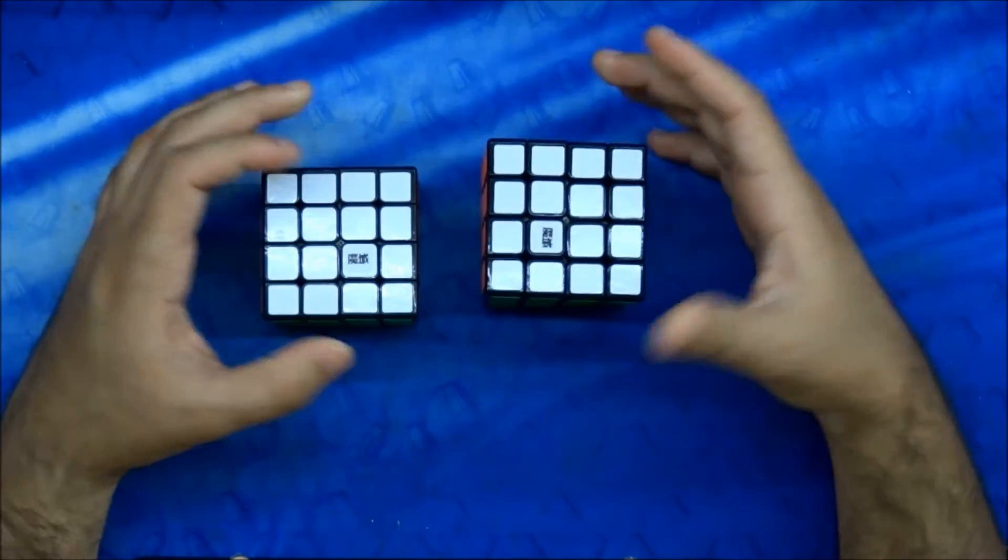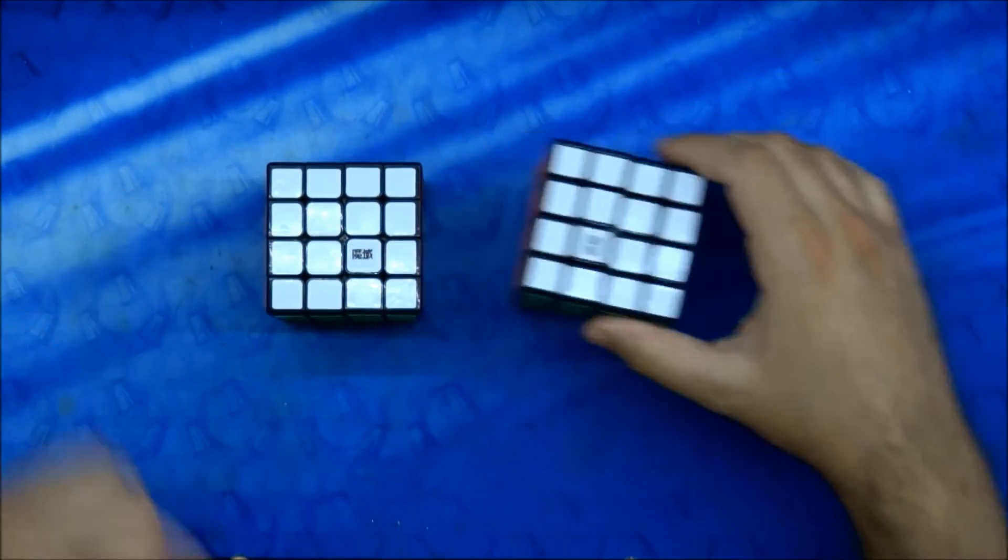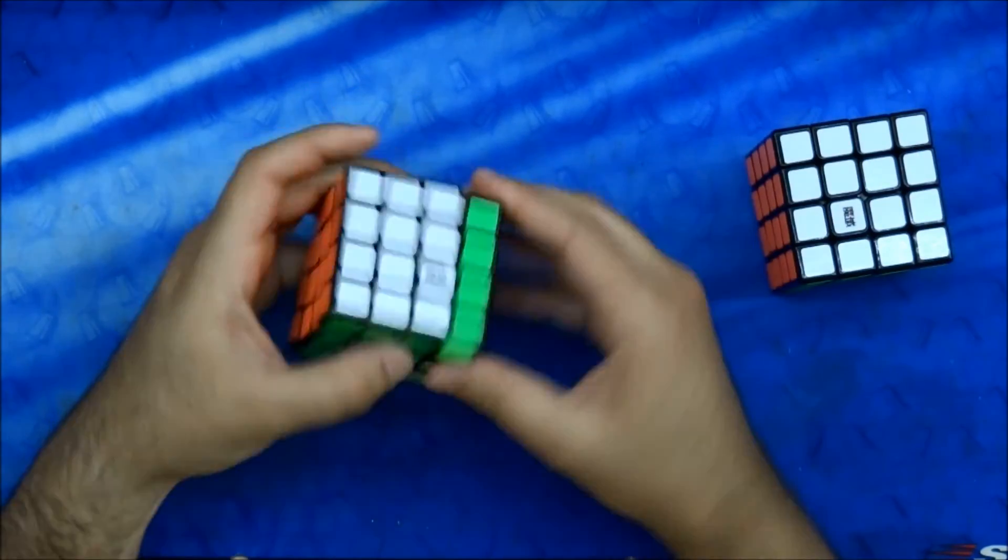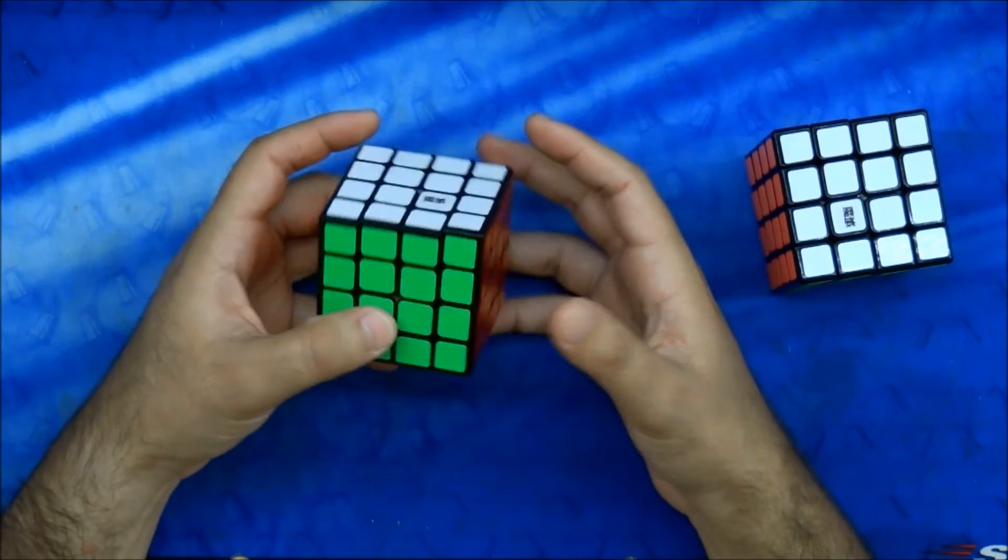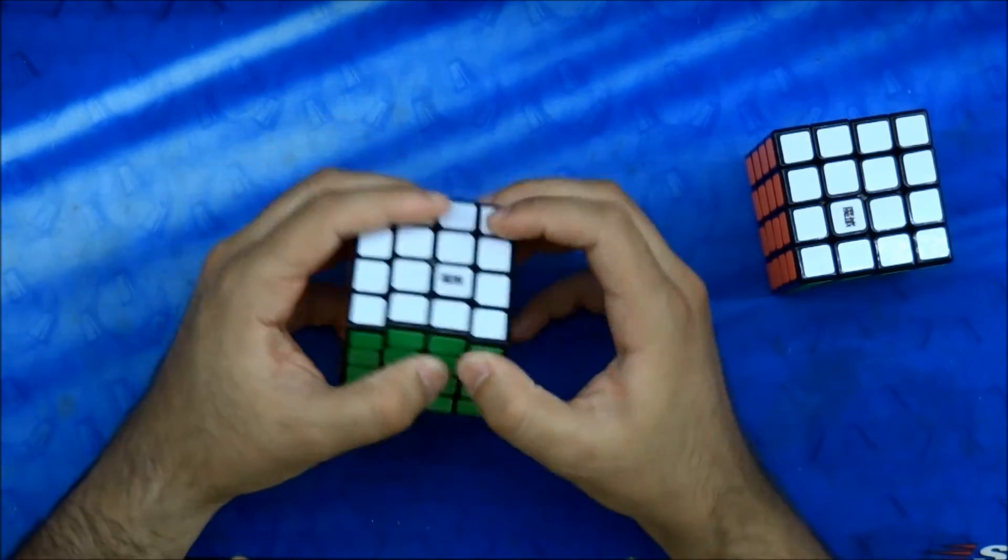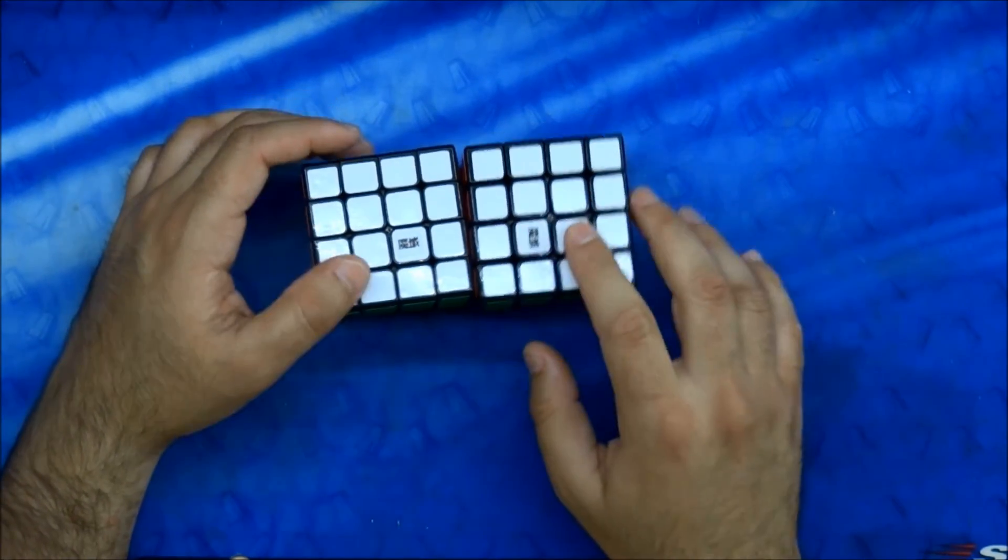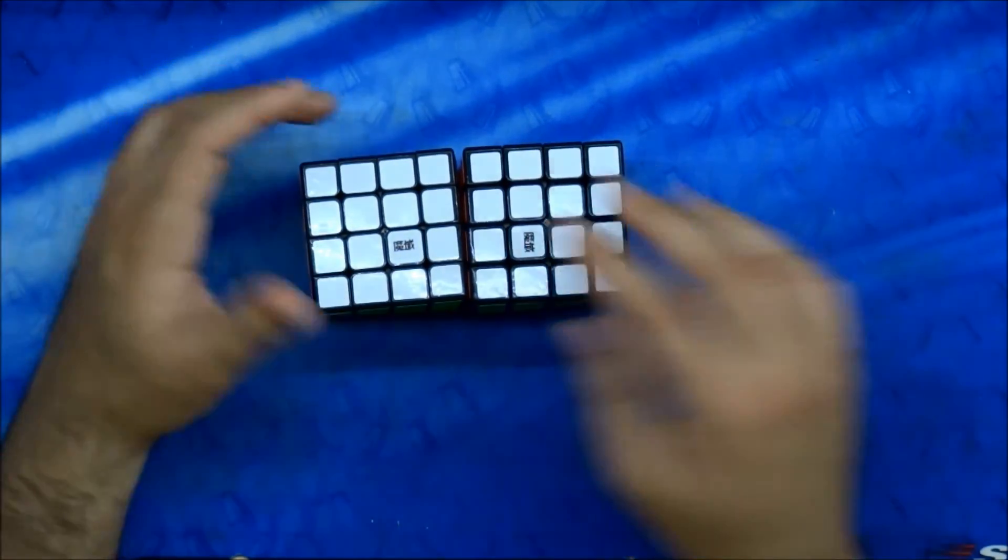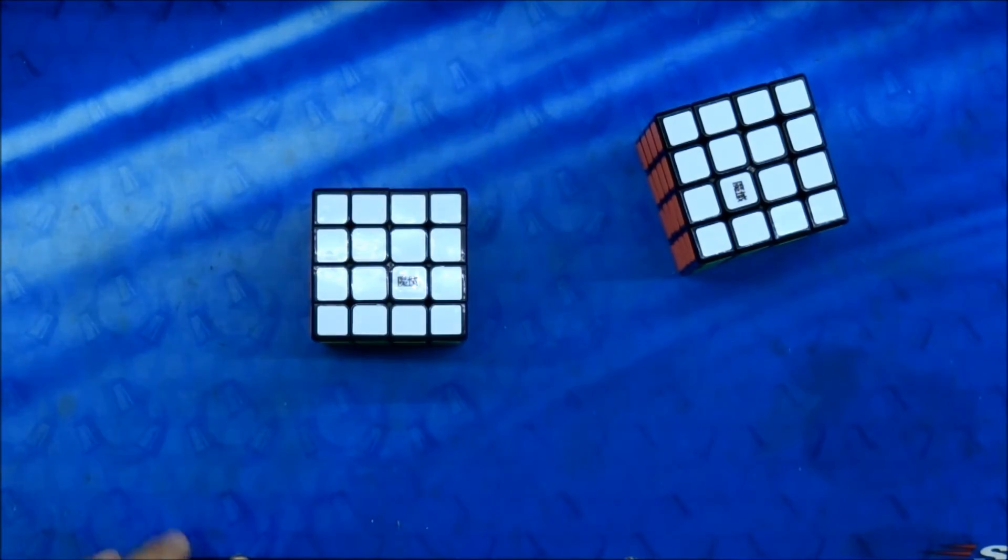But from those two, the one that I'm going to make from now on my main cube is the 60mm cube actually, because it just feels a lot better when I'm solving it. Compared to this one it feels very, very... this feels like really big and this one feels like the right size. I guess it's because it's very close to the 3x3.